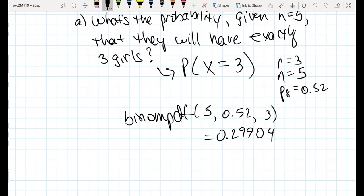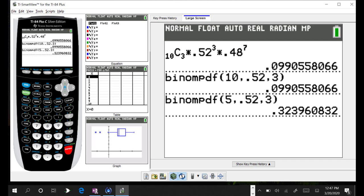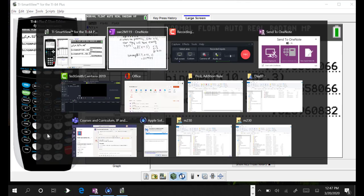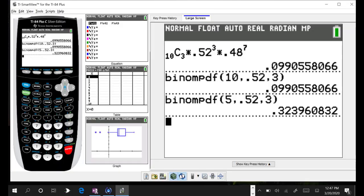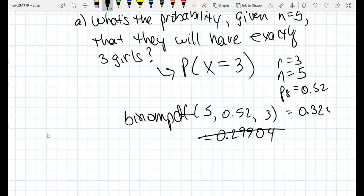So let me do that just one time. I'm going to plug in the 5, .52, and the 0.3. So if I go second entry to recall the previous entry and change the number of trials that we had looked at previously with 10, let's replace that with a 5. Let's see what that value is. It's 0.3239. Let me make a correction here, so the probability is not 0.299 but it's actually the 0.32396.